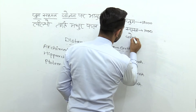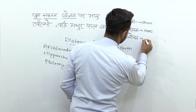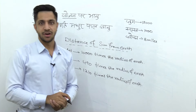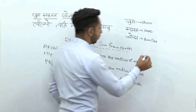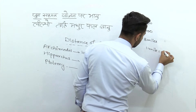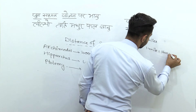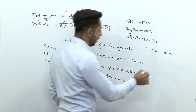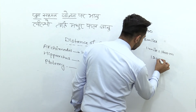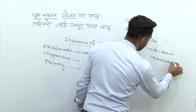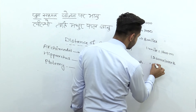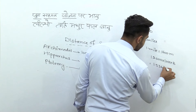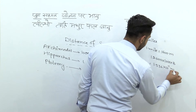Aur 'jogen' — yeh jogen kya hai? Jogen hota hai eight miles. Aur main aapko bata dun that one mile is equals to sixteen hundred meters. Agar main in tino ko multiply karu toh dekhe kya aata hai: twelve thousand into thousand into eight — that means yeh aata hai lagbhag 1.536 into 10 to the power 11 meters.